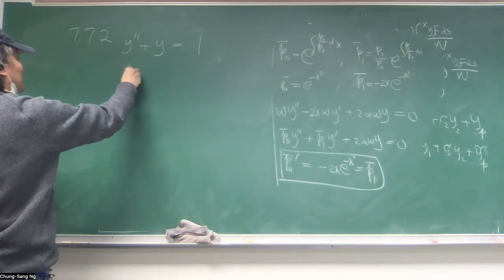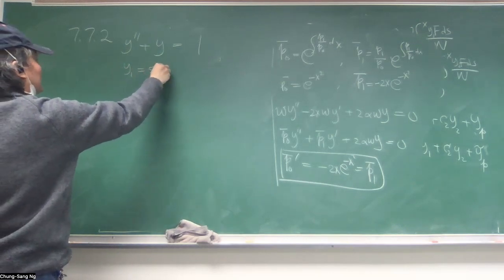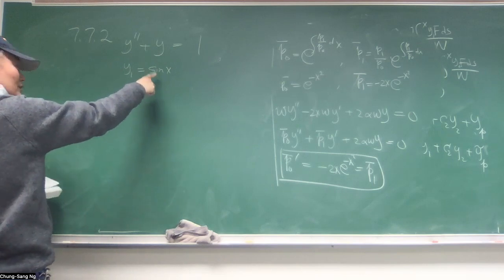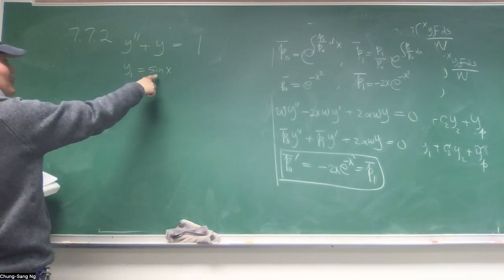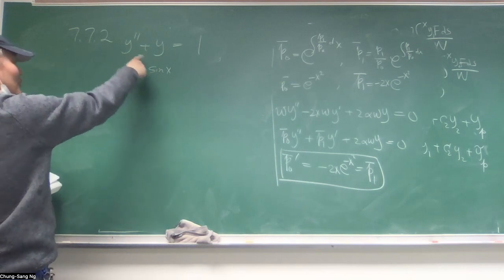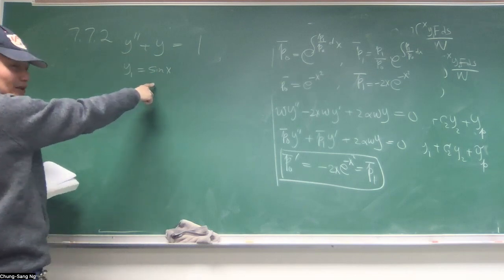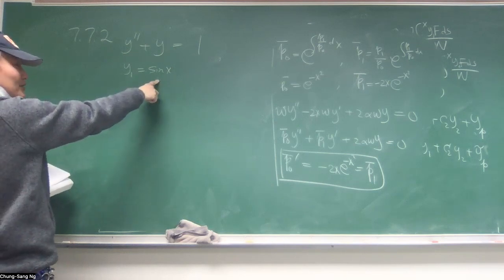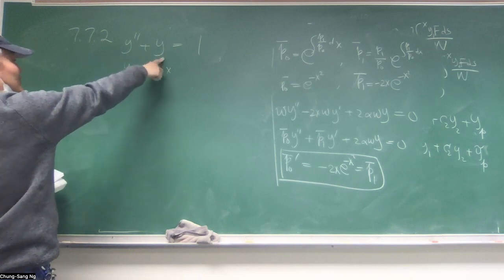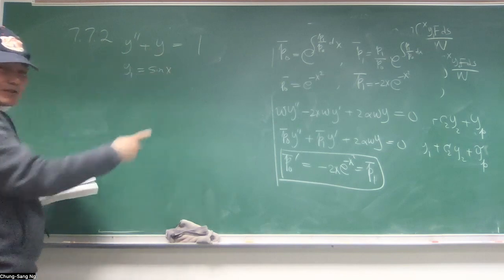Okay, so you can choose y1 equals sine x. And you can show that this satisfies the homogeneous equation by putting it back here. So sine double prime will give you minus sine, right? The sine prime will give a cosine. Cosine prime will be minus sine. So that will be minus sine. That will be sine and that adds up to zero.